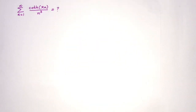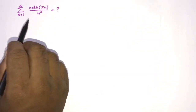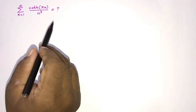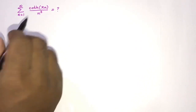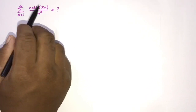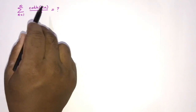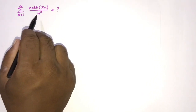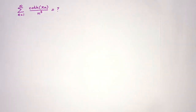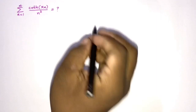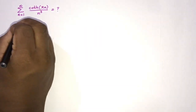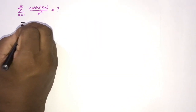Welcome to the mathematics channel, and thanks for watching. In this video we are going to find the sum of this nice infinite series including hyperbolic cotangent: the sum from n equals 1 to infinity of hyperbolic cotangent of pi n over n cubed. To begin, I'm going to take another infinite series: the sum from n equals 1 to infinity of 1 over n squared plus x squared.